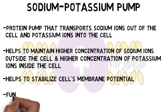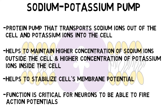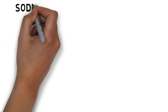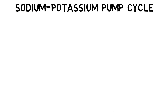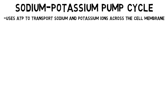This is critical for the neuron to be able to fire an action potential, which is the basis of the electrical signaling of neurons. The sodium-potassium pump is a large membrane-associated enzyme that uses the energy of adenosine triphosphate, or ATP, to transport sodium and potassium ions across the cell membrane.